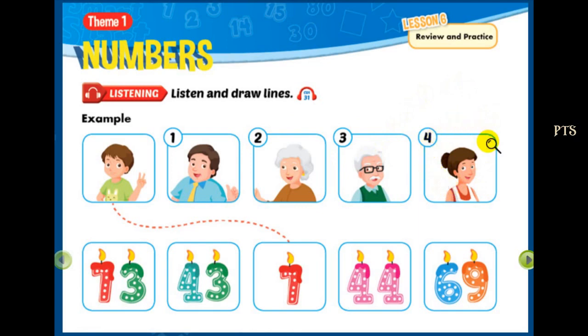4. Who's she? She's Tom's mom. She's Anne. How old is she? She's 43 years old. 43? Yeah, that's right.